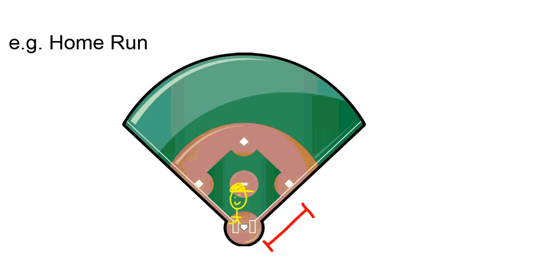First off, we know the distance from home plate to first base is 90 feet. And that 90 feet is the same from first to second, second to third, and third to home.